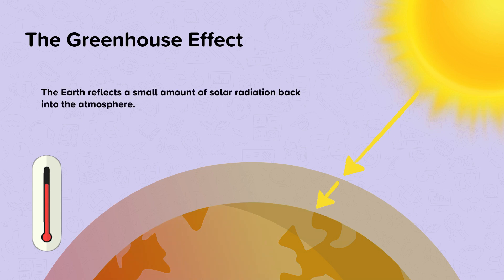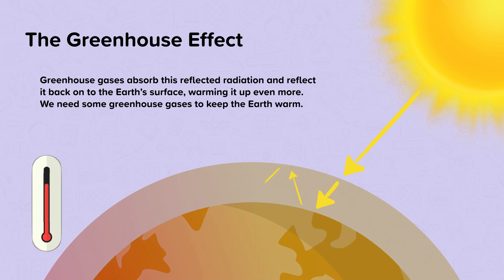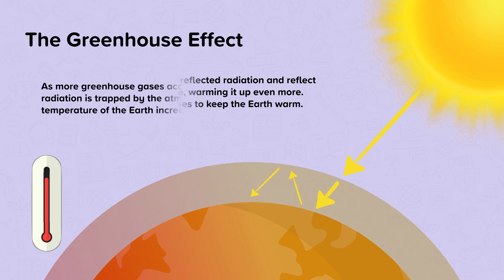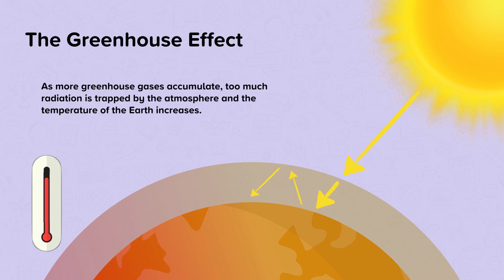The earth reflects a small amount of solar radiation back into the atmosphere. Greenhouse gases absorb this reflected radiation and they reflect it back onto the earth's surface, warming it up even more. We need some greenhouse gases to keep the earth warm. However, as more greenhouse gases accumulate, too much radiation is trapped by the atmosphere and the temperature of the earth increases.